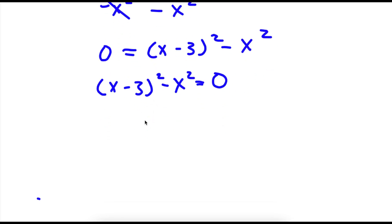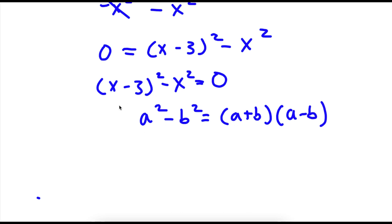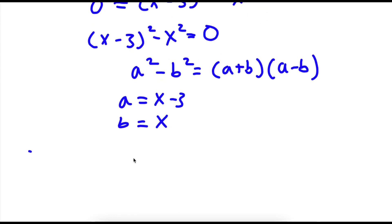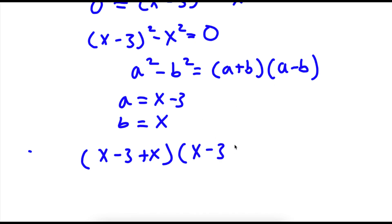Now if I have something in the form a squared minus b squared, this is equal to a plus b times a minus b. So in this case, a would equal x minus 3 and b is equal to x. So x minus 3 squared minus x squared equals a plus b, which is x minus 3 plus x, times a minus b, which is x minus 3 minus x. This is equal to 0.